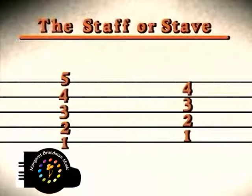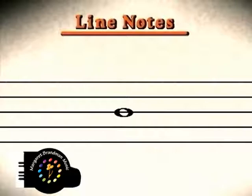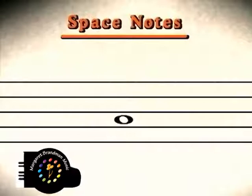Notes which are written around a line are known as line notes, and those which occur between two lines are known as space notes.